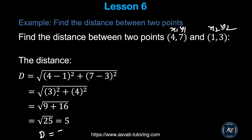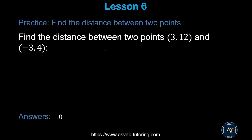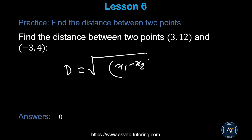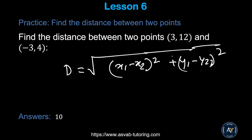Now try the distance formula yourself: d = √[(x1 − x2)² + (y1 − y2)²]. Note: it doesn't matter whether you write x1 or x2 first, because you're squaring the result — any negative becomes positive. Make sure you get the correct answer.